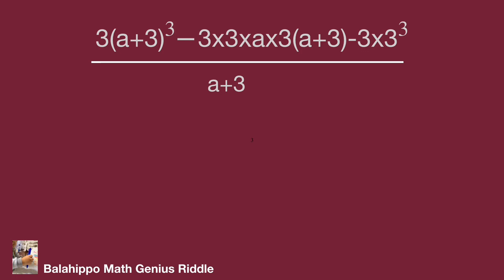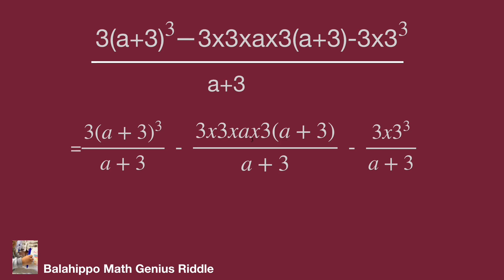Separate these three terms into three fractions: 3(a+3)³ over a+3, minus 3·3·a·3·(a+3) over a+3, minus 3·3³ over a+3.